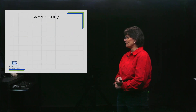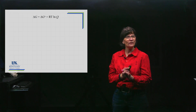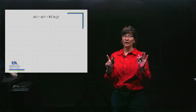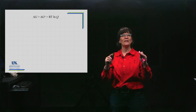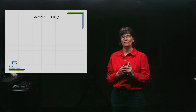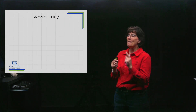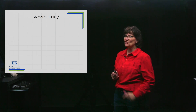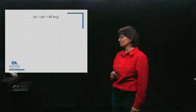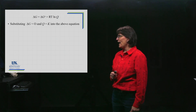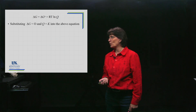Starting with that equation, I'm going to replace the plain delta G — not the standard delta G, which doesn't change. That's a snapshot of where it would be if everything was at one atmosphere or one molar. But once it reaches equilibrium, delta G becomes zero and Q becomes K.